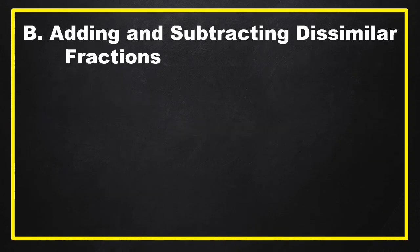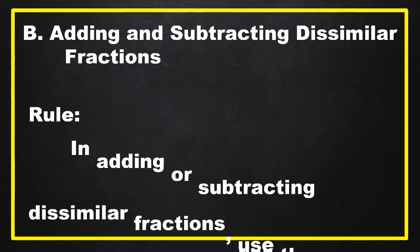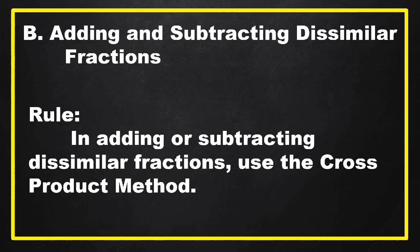Next is adding and subtracting dissimilar fractions. When we say dissimilar fractions, these are fractions having different denominators. In adding or subtracting dissimilar fractions, we use the cross-product method. We're going to learn that in our examples.